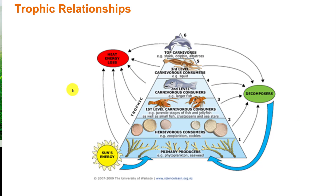Here's an oceanic version of a trophic relationship. Primary producers in the ocean are phytoplankton — floating plants and seaweed. Herbivorous consumers rely directly on the primary producers. If you are vegan, you are an herbivorous consumer in your food web. First-level carnivores consume the herbivorous consumers, second-level carnivores feed on first-level carnivores, and we can have a third-level carnivore feeding on both second and first levels, and then a top carnivore.